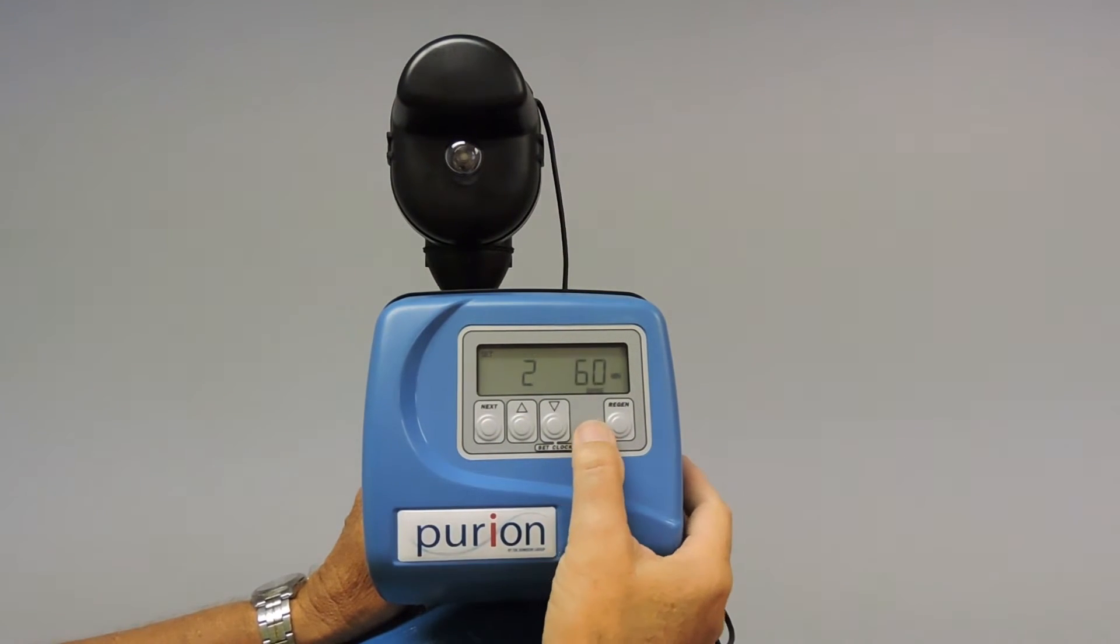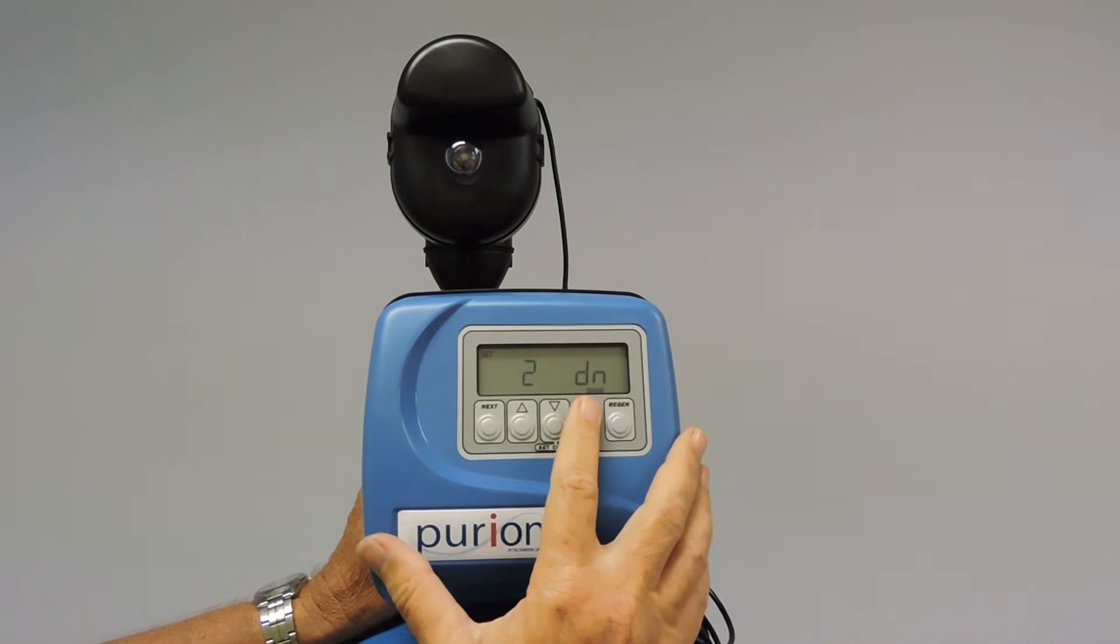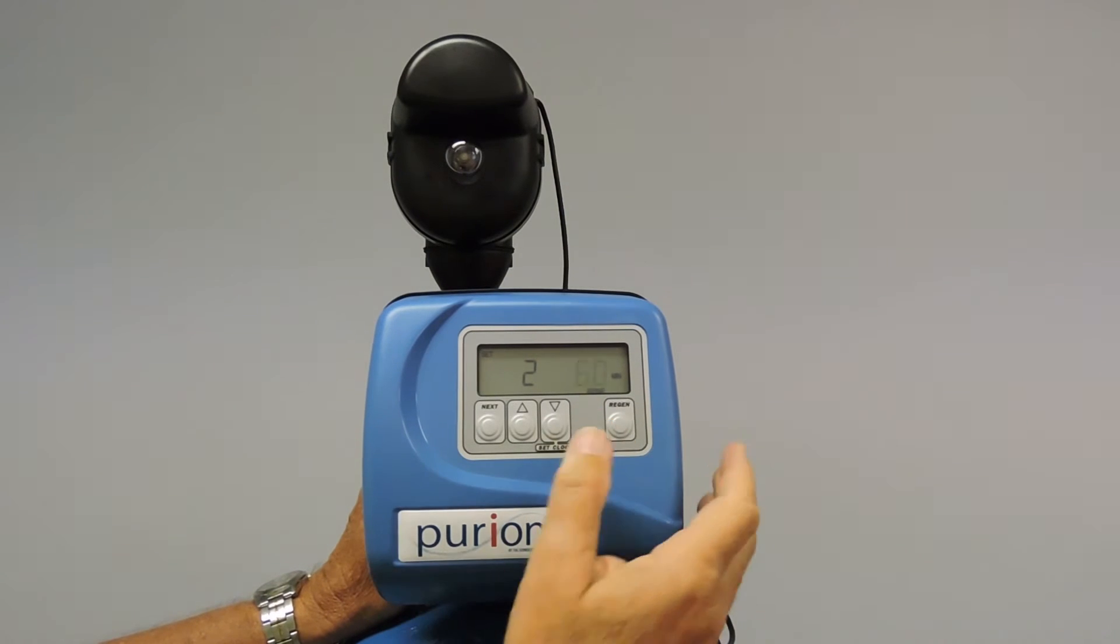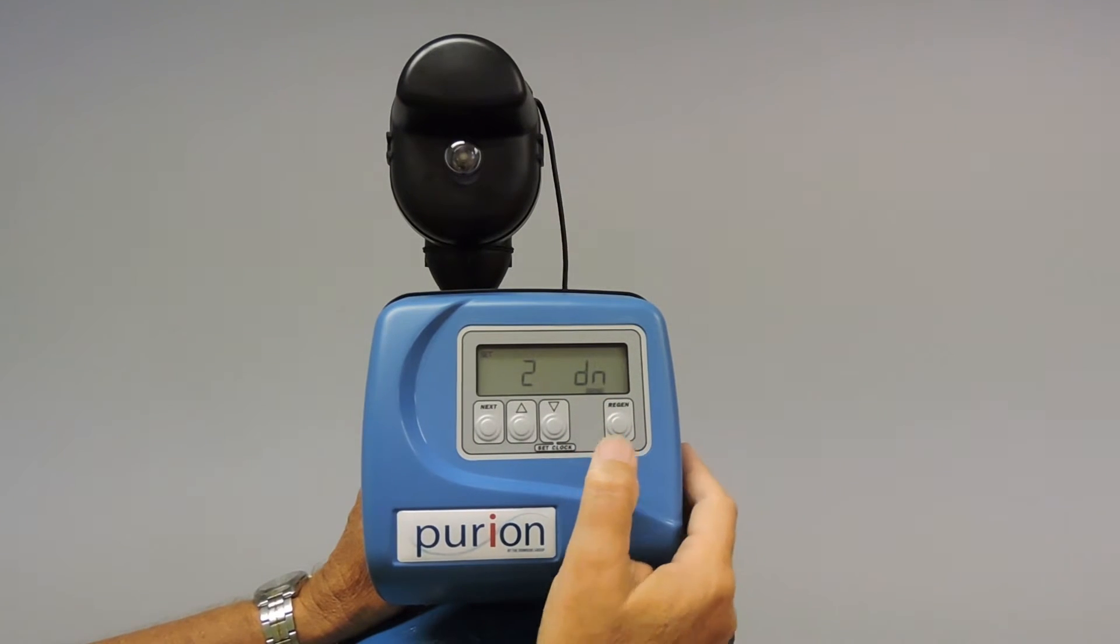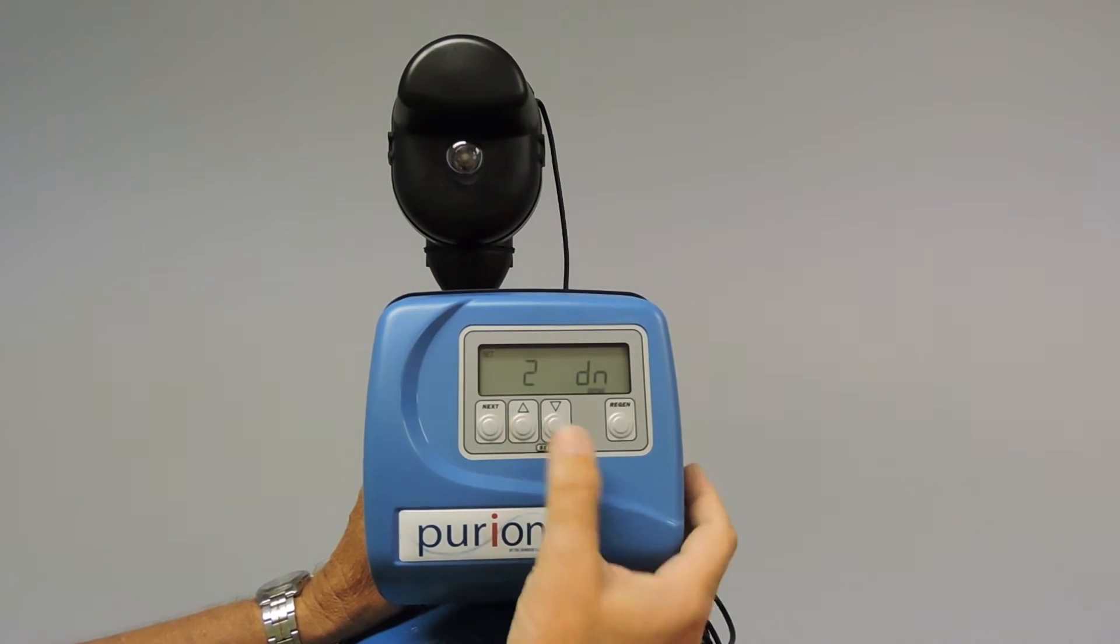We're now into the second stage which is our brine draw and slow rinse cycle. And we're using a down brining sequence. We pre-calculated our 12 inch unit is 69 minutes of time required. So we will simply arrow up.